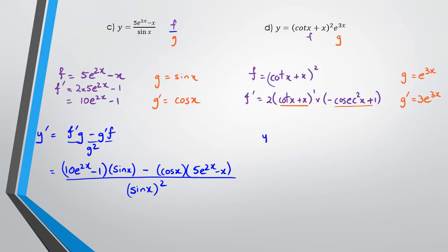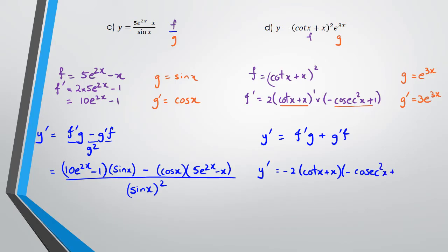Now putting it together using product rule: y' = f'g + g'f. So f'g = 2(cot x + x)(−csc²x + 1) × e^(3x), plus g'f = 3e^(3x) × (cot x + x)². Just double-check that you're doing all the differentiations, because it's very easy to forget a bracket or forget to differentiate when using chain rule — so just be careful.